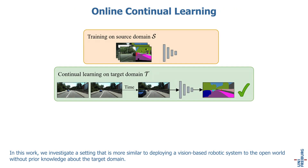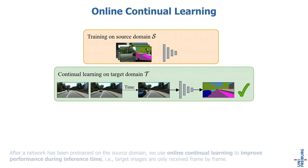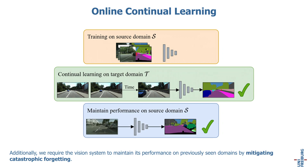In this work, we investigate a setting that is more similar to deploying a vision-based robotic system to the open world without prior knowledge about the target domain. After a network has been pre-trained on the source domain, we use online continual learning to improve performance during inference time, i.e., target images are only received frame by frame. Additionally, we require the vision system to maintain its performance in previously seen domains by mitigating catastrophic forgetting.